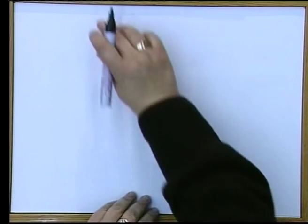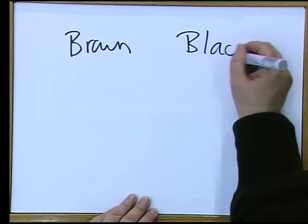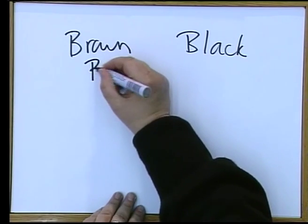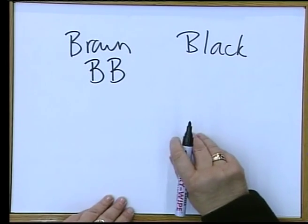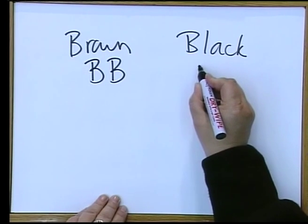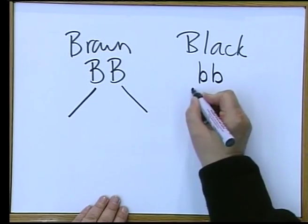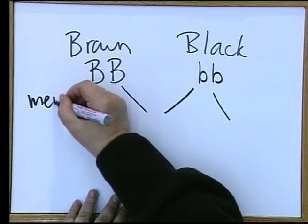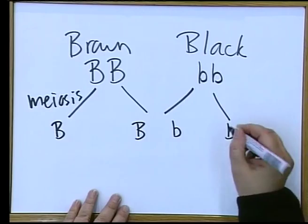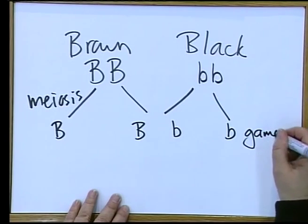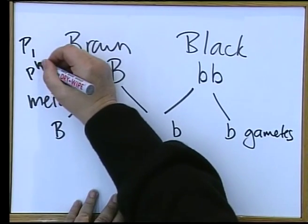What you're going to write is: let's say we've got a brown mouse and a black one. The brown mouse — we're going to use B again — is homozygous for the brown colour, which is dominant. The black mouse is the recessive one. So in this case, what you will have here: you write meiosis, and you will have your two gametes. This is the P1 phenotype.